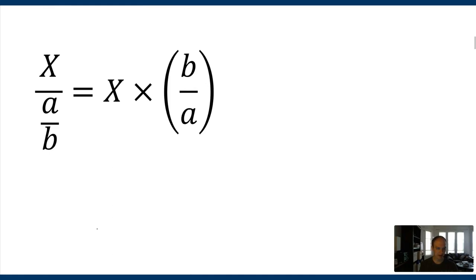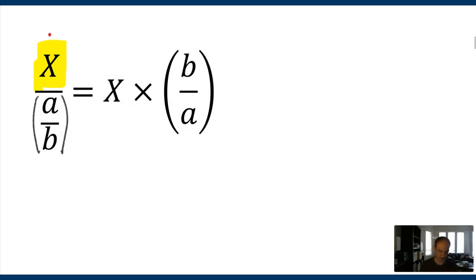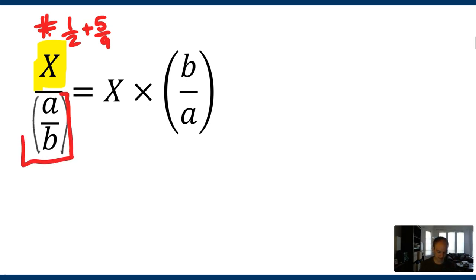So here's the general rule. If you have some big expression on top and you're dividing it by a fraction, that thing is multiplied by the reciprocal of that fraction. Now, it doesn't have to be a fraction on top — that's why I used just a big letter X. It can be anything: a number, a single fraction, or a sum of other fractions. It doesn't matter what's grouped together on top. What matters is that you have a single fraction on the bottom.